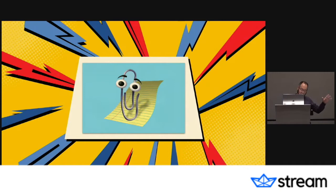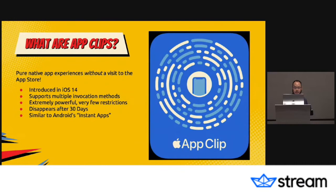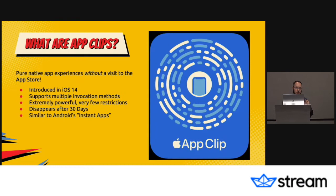They're not exactly like they sound, thankfully. But what are they? App Clips in actuality are pure native app experiences without a visit to the App Store. They were introduced in iOS 14. They support multiple invocation methods. They are extremely powerful with very few restrictions, surprisingly. They disappear after 30 days — if you don't interact with it, it will just disappear off your device. And if you are looking for an Android equivalent, on Android these are called Instant Apps. There are pros and cons to Apple vs. Android, but I won't cover Instant Apps today.